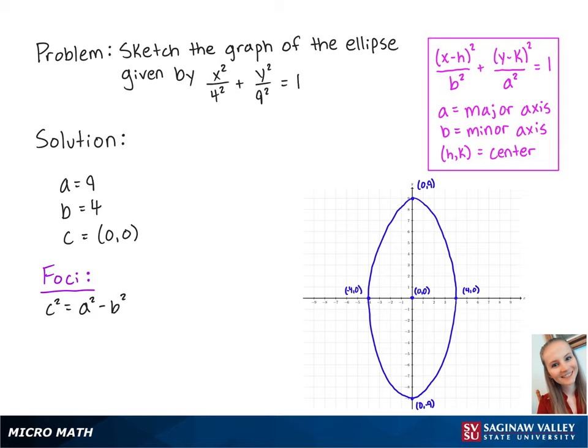where c represents the distance from the center on the major axis. So for this problem, we have 9 squared minus 4 squared, which equals 65.